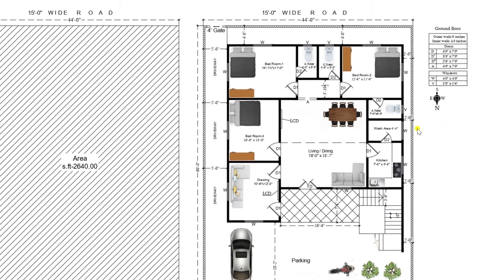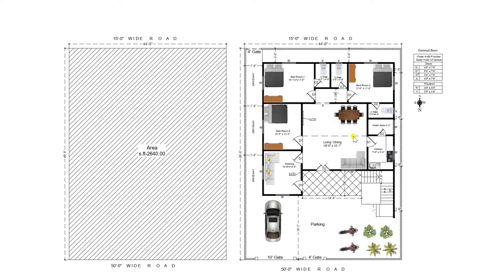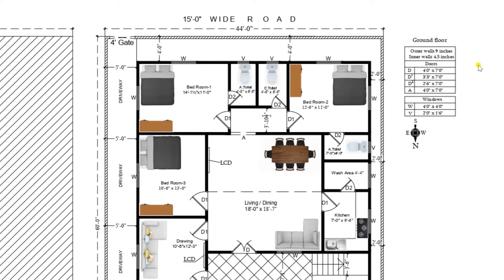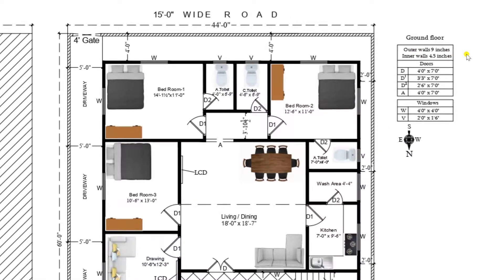This plan is having a phase of South and also having the phase of North. On the North and South phase we are having a 15 feet wide road and a 50 feet wide road. Now you can see the dimensions available. Outer walls are of 9 inches and inner walls are of 4.5 inches.